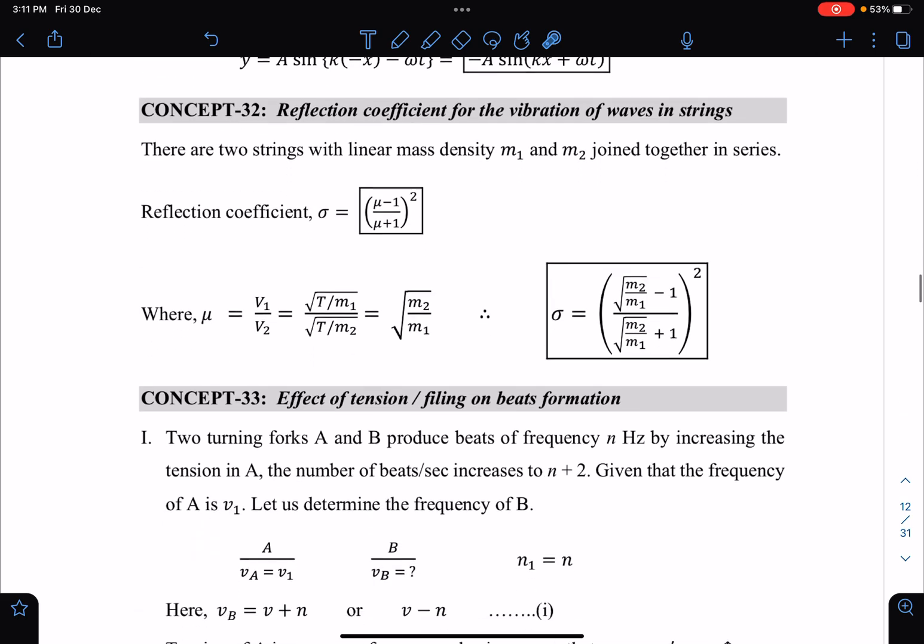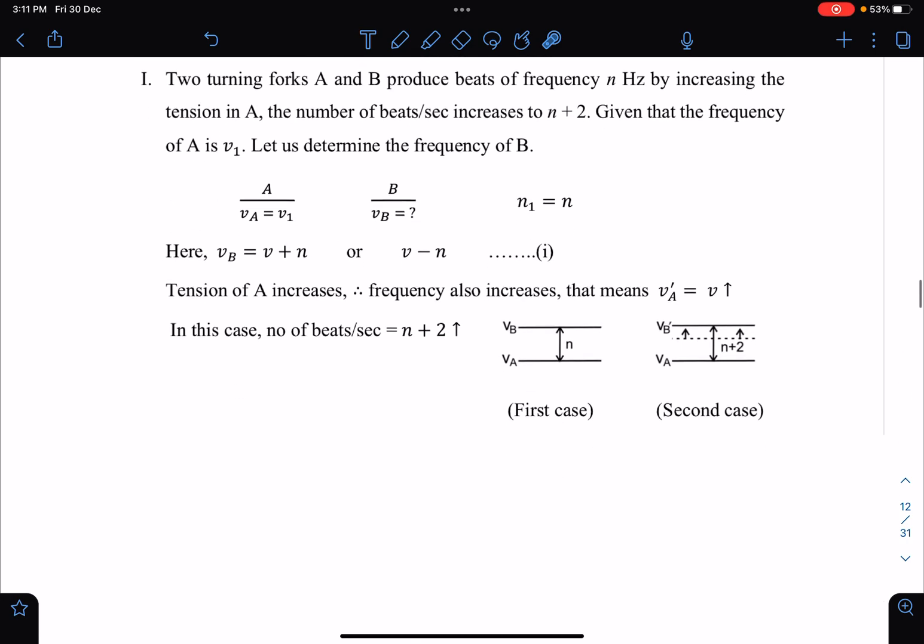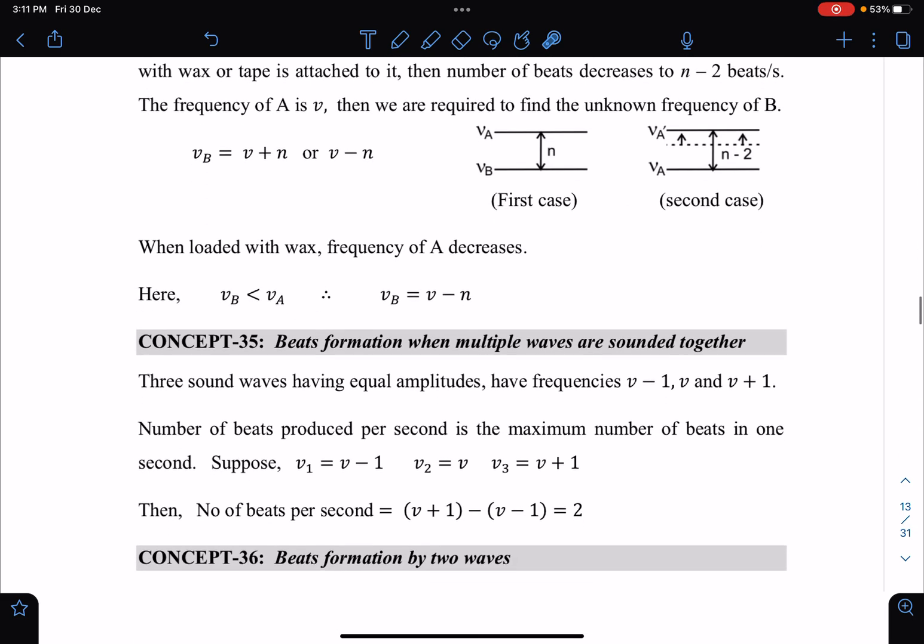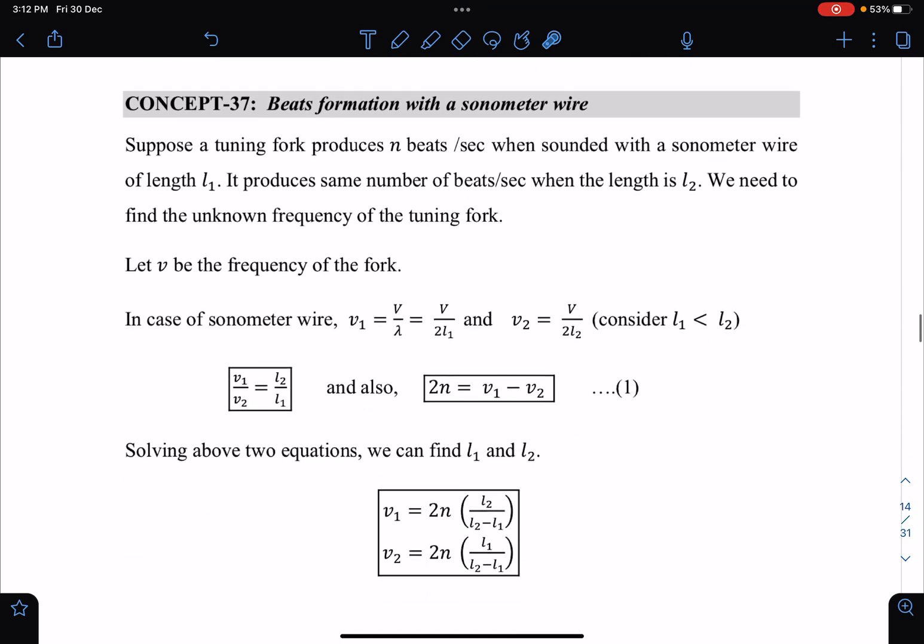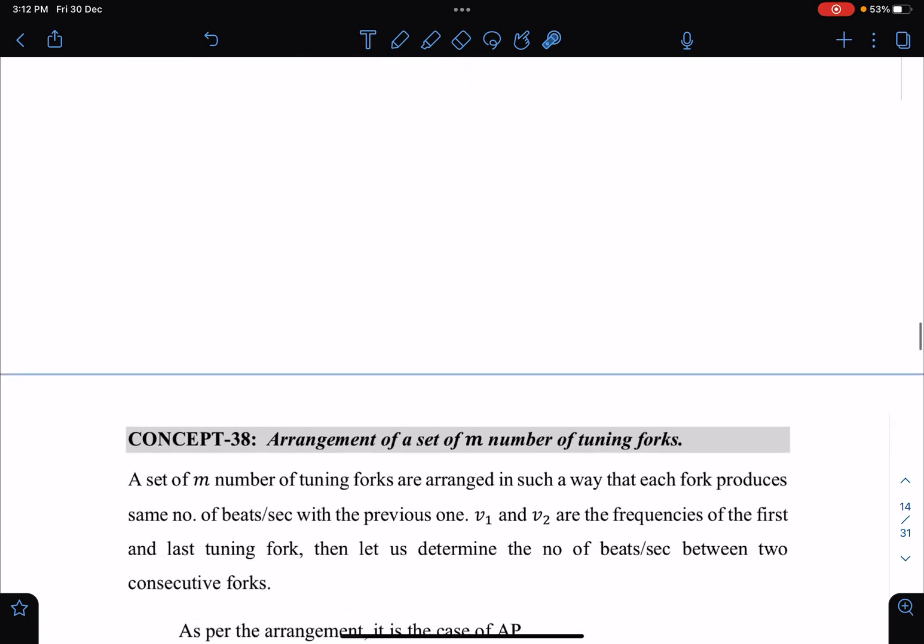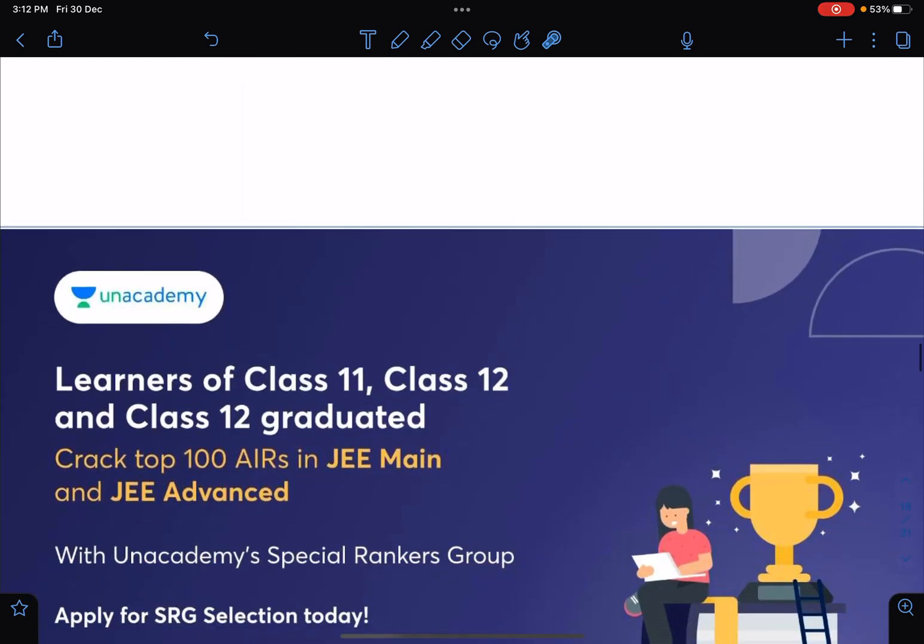Reflection coefficient and transmission coefficients are there. Effect of tension or filing on beats formation - those questions have come frequently. Effect of loading and tapping on beats formation on tuning fork. Beat formation when multiple waves are sounded together. Beat formation by two waves. Beats formation in sonometer wire has come many times. Arrangement of set of tuning forks - multiple tuning forks are given, then if beat frequency is given, how to relate those two. All these 38 results are there along with the previous problems.